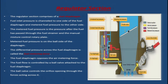The regulator section comprises a fuel diaphragm. The fuel diaphragm has two fuel pressures: unmetered fuel pressure on the left side and metered fuel pressure on the right side. A pressure differential is created across the fuel diaphragm called the fuel metering force, which acts opposite to the air metering force. Movement of the fuel diaphragm results in movement of the ball valve, controlling fuel metering.